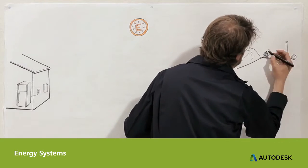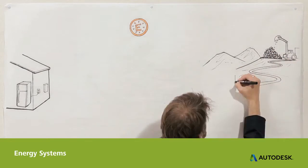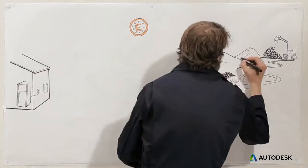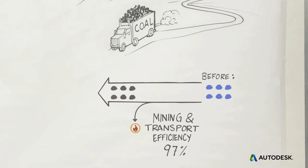So if your power is from a coal plant, the first stage in your energy system is the mining and transport of the coal. Although it takes energy to mine the coal and truck it to a power plant, the energy made available is much greater. So that step is about 97% efficient.